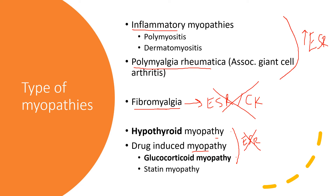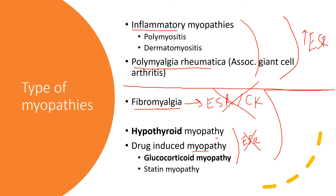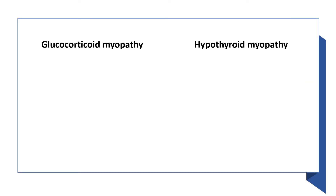So if you know that ESR is associated with inflammatory myopathies and polymyalgia rheumatica but not the others, you can easily differentiate in exam questions — you can eliminate some answers and move on. This is the main point of this topic.